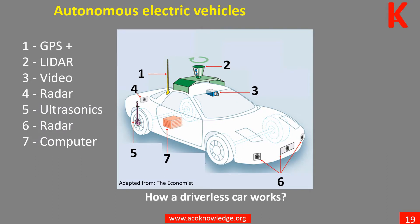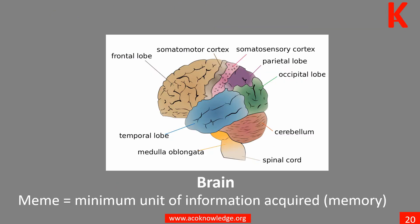Unit 8 is about the intelligent electricity grid that allows the decentralization of the production of renewable energies and increases efficiency in the use of energy. Autonomous electric vehicles make the driver unnecessary. Drones and robots are also covered.